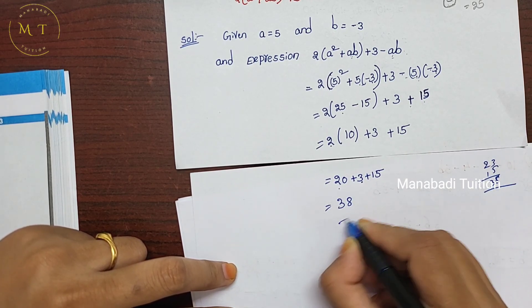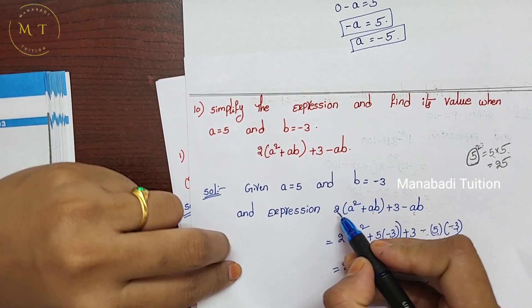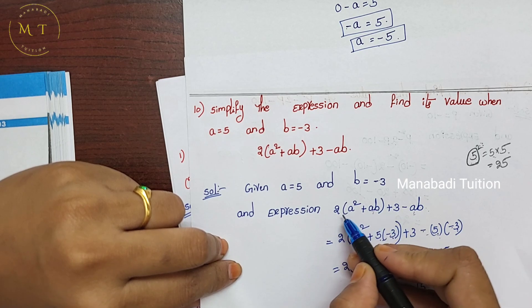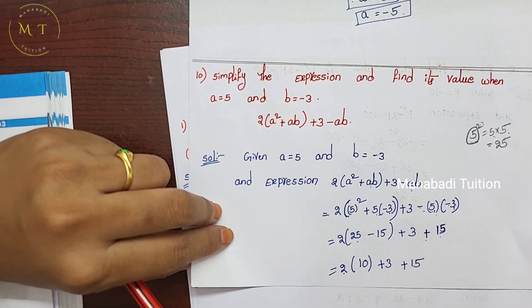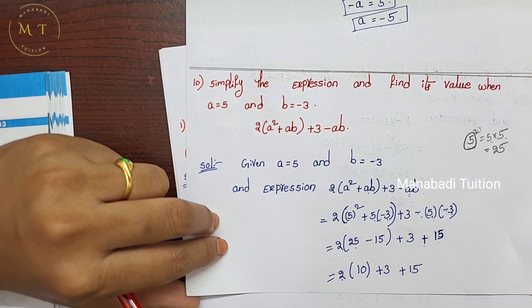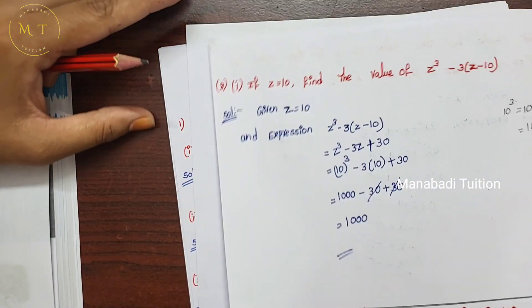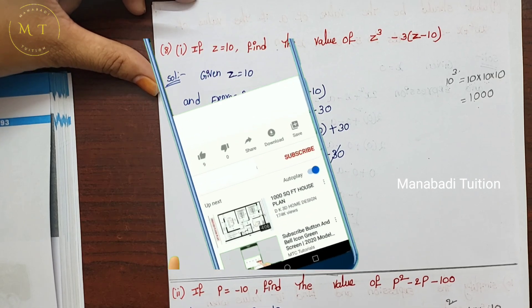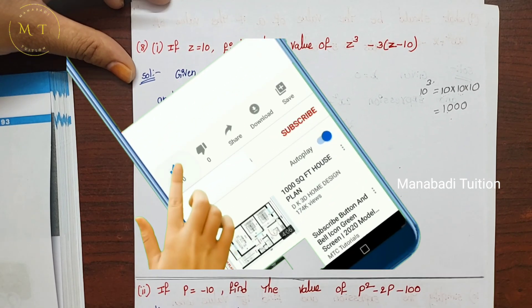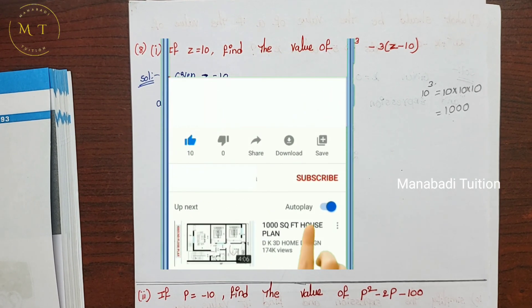So the answer is equal to 38. Here you can multiply the two terms, substitute, and you will get the same answer. That's it — this problem is complete. Please like this video, like and share, and subscribe to our channel.